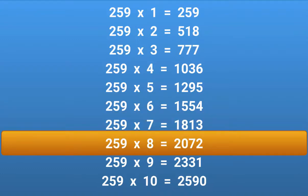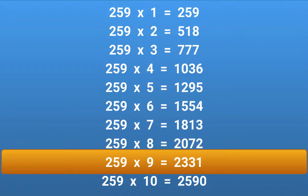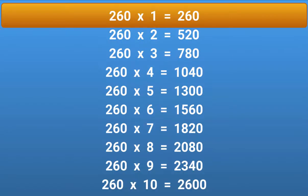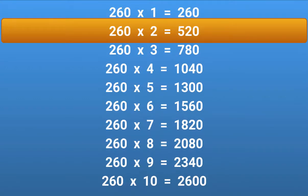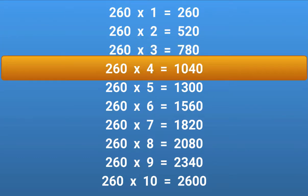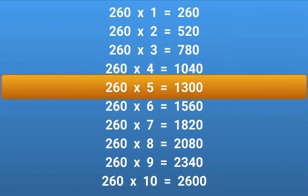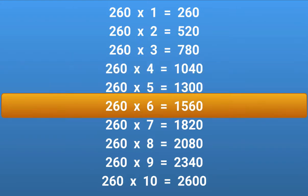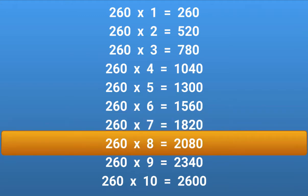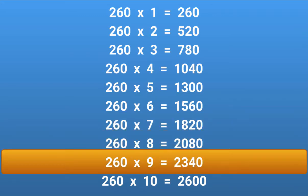259 × 10 = 2590. 260 × 1 = 260. 260 × 2 = 520. 260 × 3 = 780. 260 × 4 = 1040. 260 × 5 = 1300. 260 × 6 = 1560. 260 × 7 = 1820. 260 × 8 = 2080. 260 × 9 = 2340. 260 × 10 = 2600.